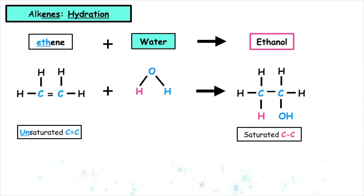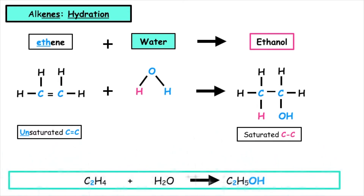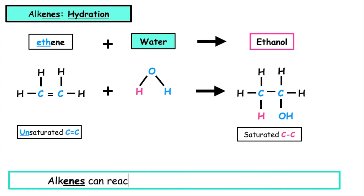If we were to change this into the molecular formula, we would have C2H4 plus H2O goes to C2H5OH. Alkenes plus water react to produce alcohols.